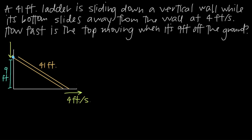What we need to find is the rate of change of the top of the ladder — the rate of change of this vertical distance, the distance between the top of the ladder and the ground. With these ladder problems, the thing we need to realize is that we're dealing with a right triangle, because we have a perfectly vertical wall and we assume the ground is horizontal, giving us a 90-degree angle.